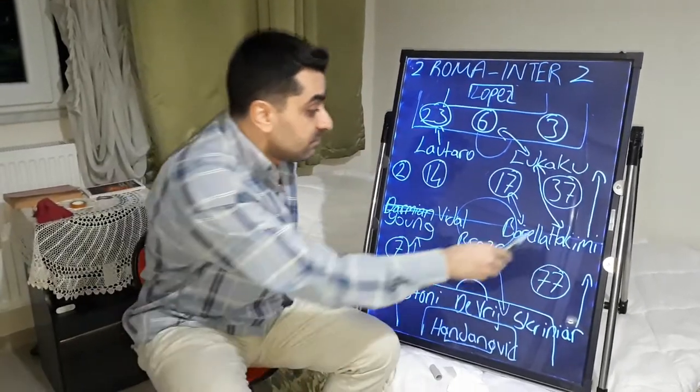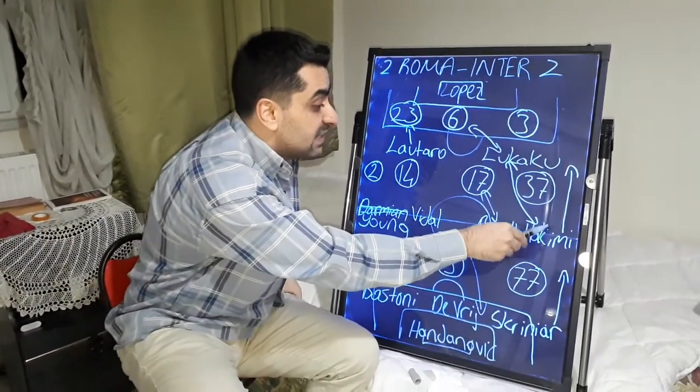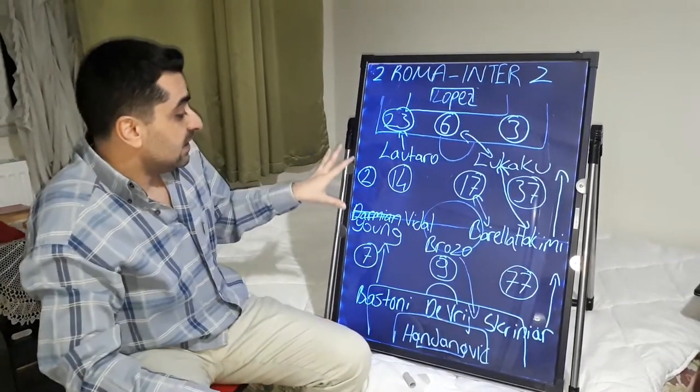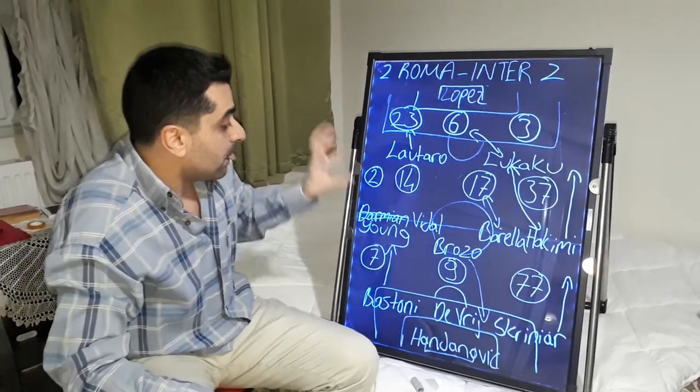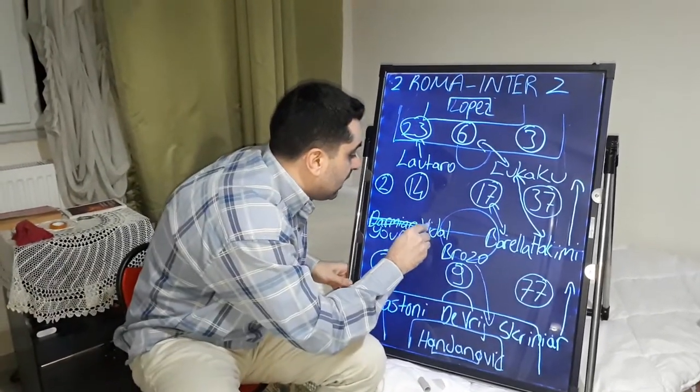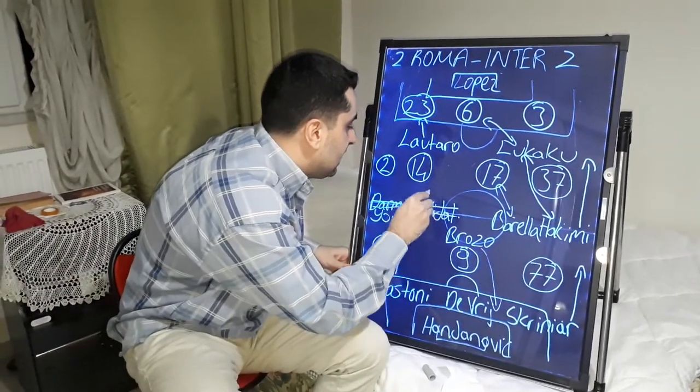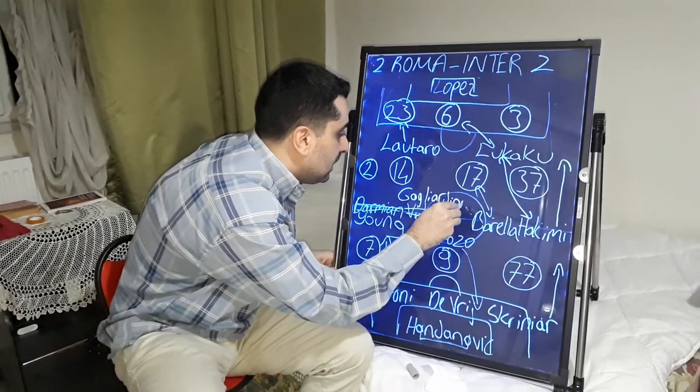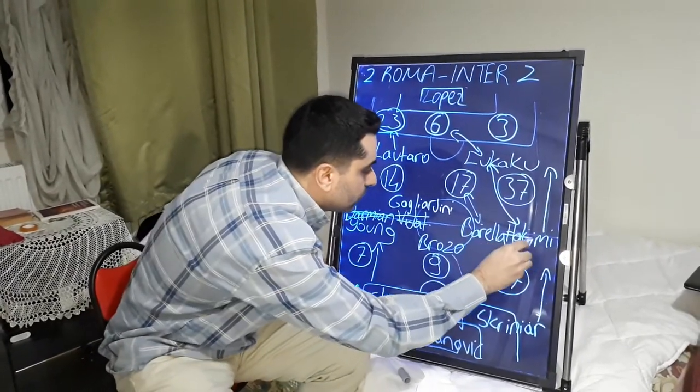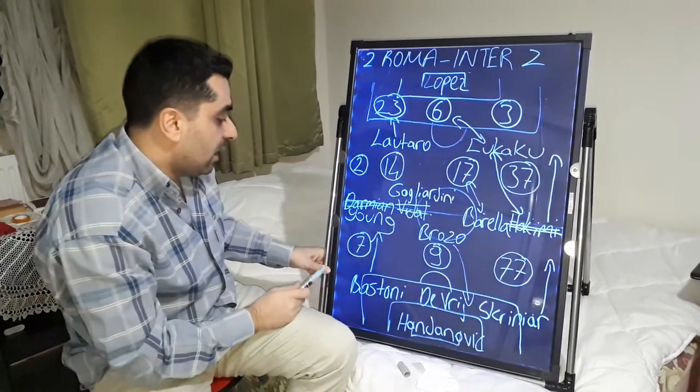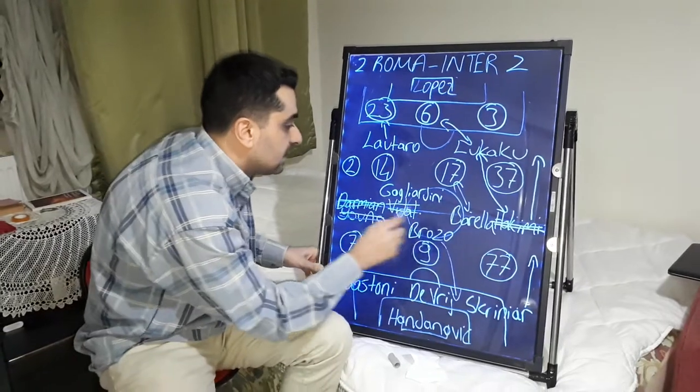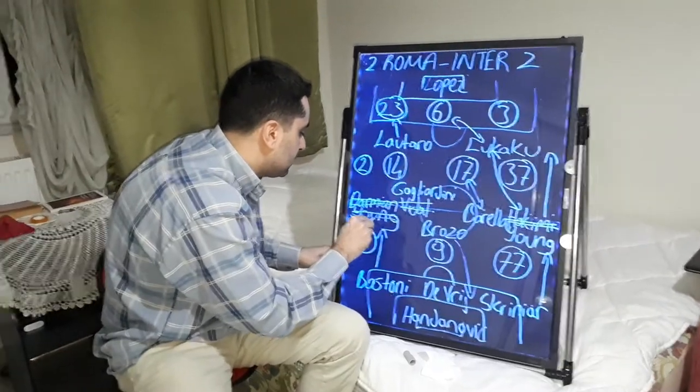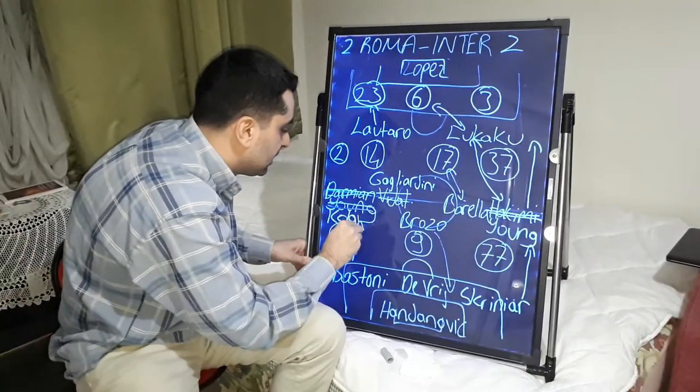And for example, in the second goal of Inter, Hakimi scored the goal. And two more substitutions made by Antonio Conte. Arturo Vidal was a little bit injured and Gagliardini replaced him. Gagliardini played here and Hakimi out. Gagliardini, Kolarov in. After these substitutions, Ashley Young played on the right. Young played on the right. Kolarov played here on the left instead of Ashley Young, Kolarov.